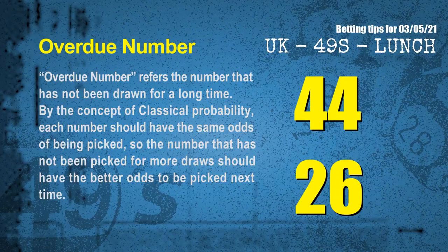The final information for you is overdue numbers. An overdue number refers to a number that has not been drawn for a long time. Also by the concept of classical probability, each number should have the same odds of being picked, so the number that has not been picked for more draws should have better odds to be picked next time. After counting thousands of results, the most overdue two numbers are 44 and 26.